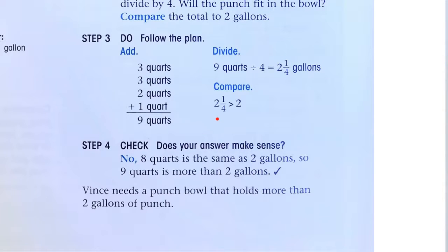2 1⁄4 gallons is greater than the 2 gallons that the punch bowl can hold. So what's going to happen if Vince makes his punch? It's going to overflow.